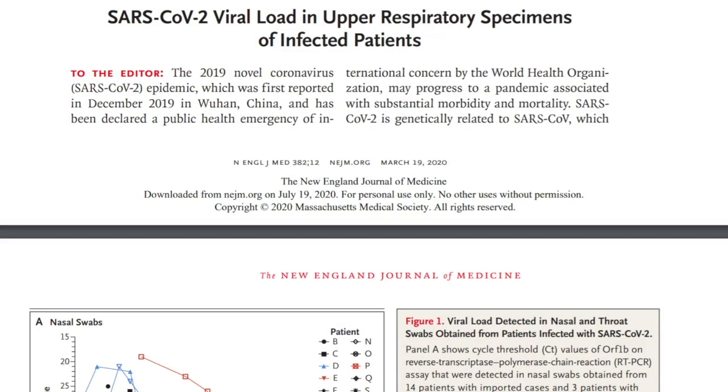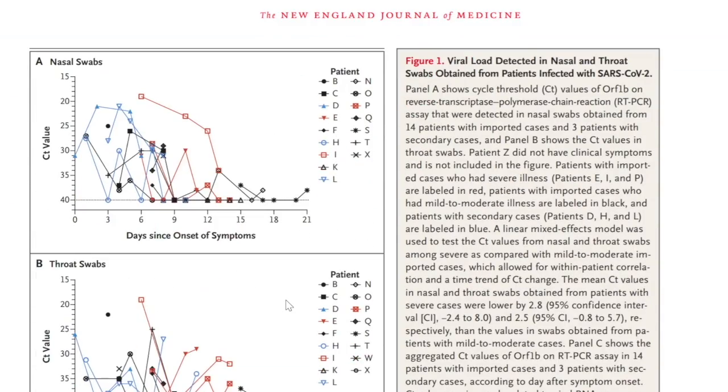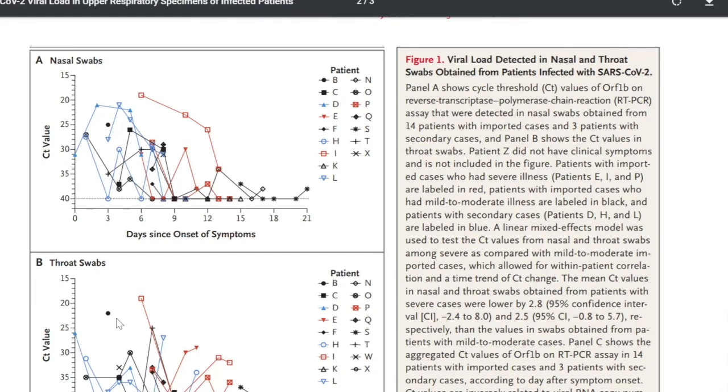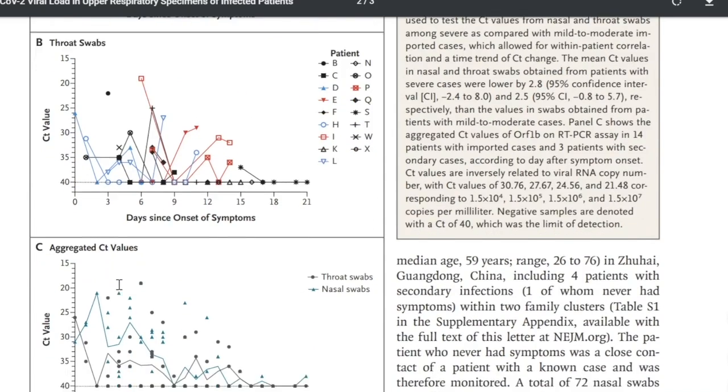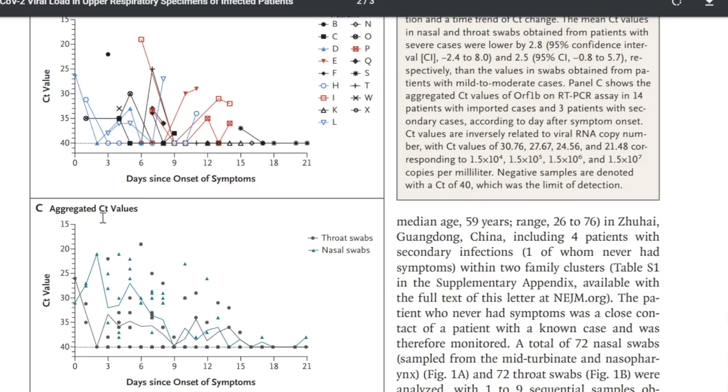There was this paper published in the New England Journal of Medicine that looked at SARS-CoV viral loads in upper respiratory specimens of infected patients. I want you to notice something here. These are all different patients looking at nasal swabs, throat swabs, and then they looked at something called the aggregated CT value. This is something really important that I want you to understand. Here are the days since onset of symptoms on the x-axis, and then they have something called the CT value.